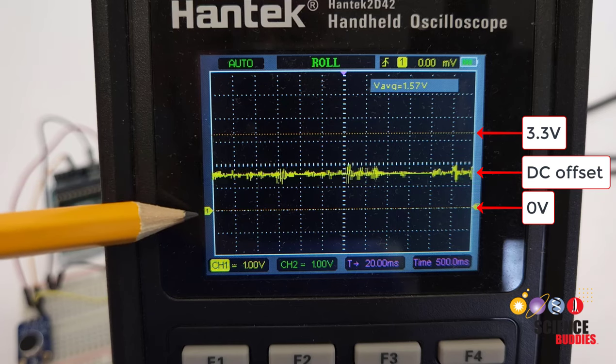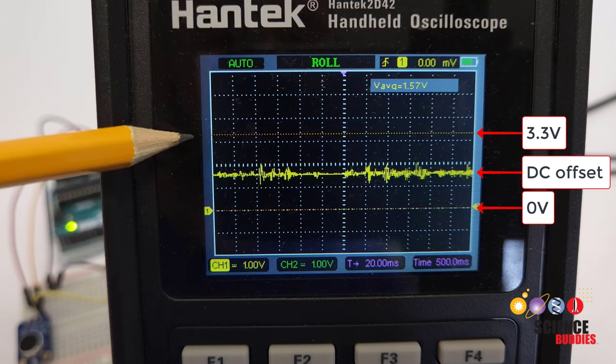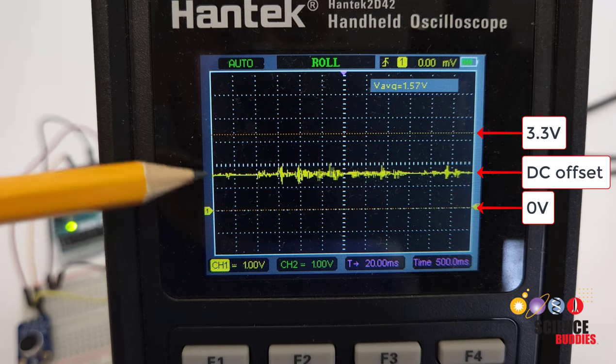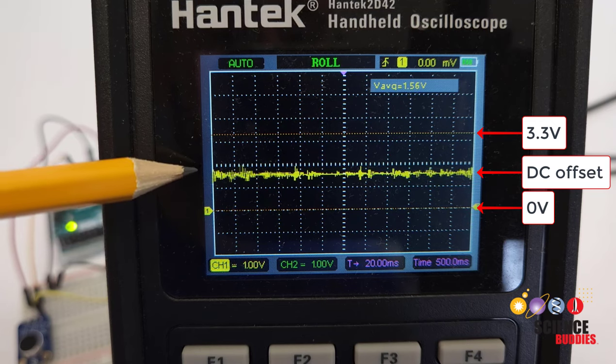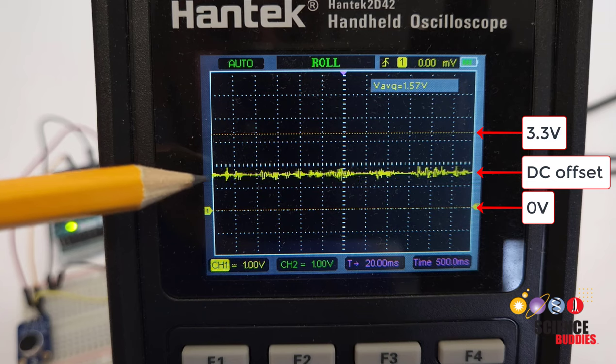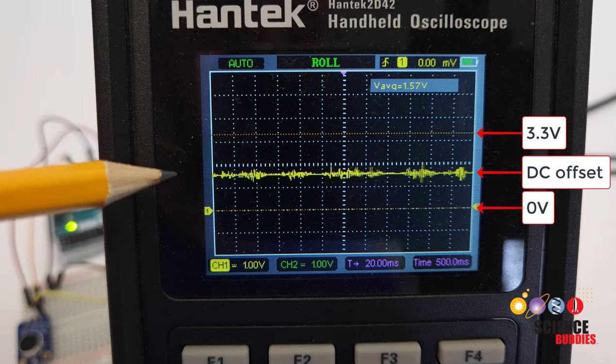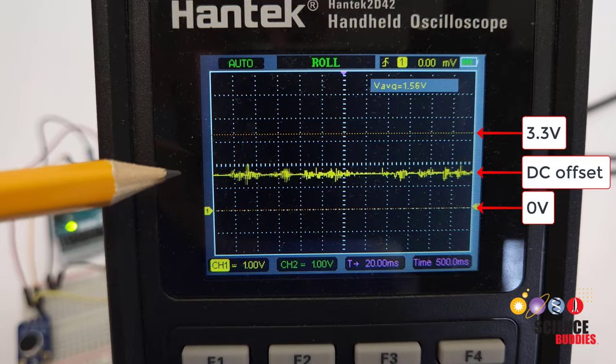So again, it's not that zero means no sound and maximum means loud sound. It's the difference from that neutral or baseline value that you need to use to calculate how loud the sound is, which is what I used to control how many LEDs I was lighting up. So we'll see that when we look at the code later in the video.